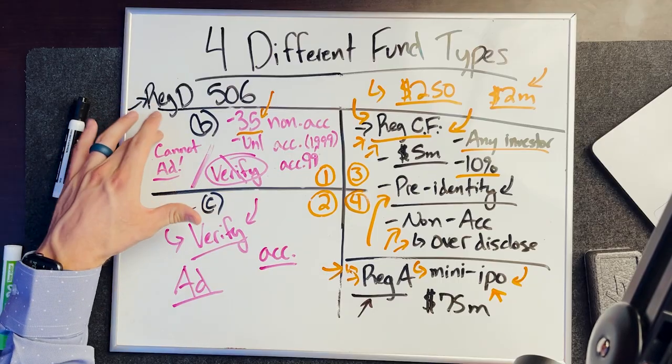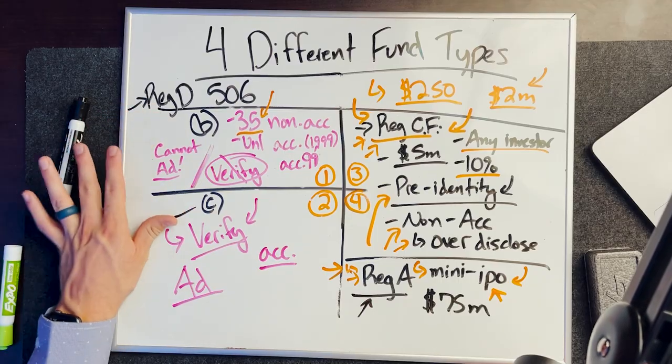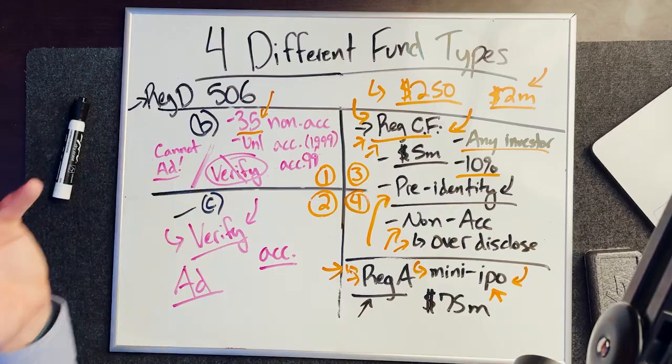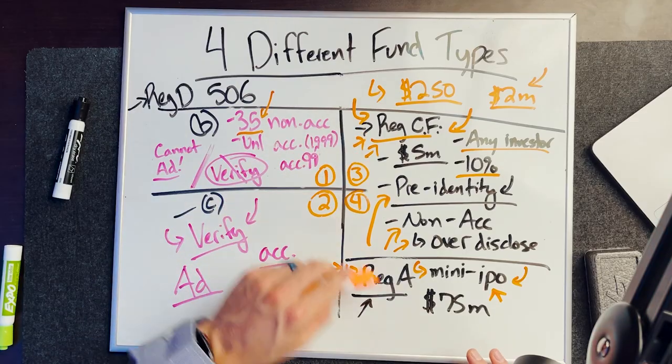For all my funds, we've done Reg D 506B or 506C. You can weigh the pros and cons. Most funds go this route because it's the scalable option. Unless you've got a marketing strategy, you can go Reg CF or Reg A.